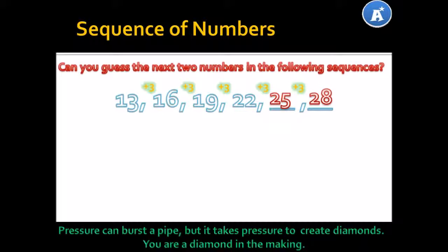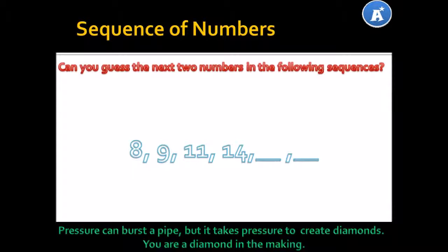Let's try another example — isn't this fun? We have 8, 9, 11, 14. Help me finish this sequence. How can I get from 8 to 9? Did you say 1? That is brilliant. How about from 9 to 11? Did you say 2? That is correct. How about from 11 to 14? Yes, it is 3. Do you see that we're simply counting up: 1, 2, 3? So then, what do we have to add to 14 to get the next number? We have to add 4. So 14 plus 4 gives us 18. Now, how do we get the next number in the sequence? We have to add 5. So that number will be 23. Brilliant.